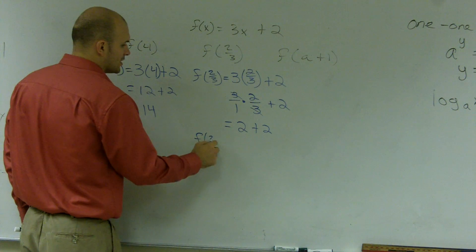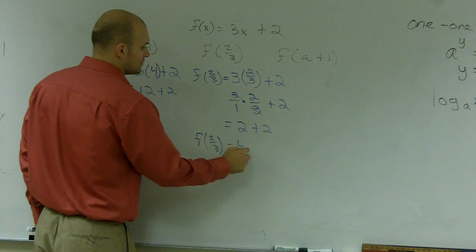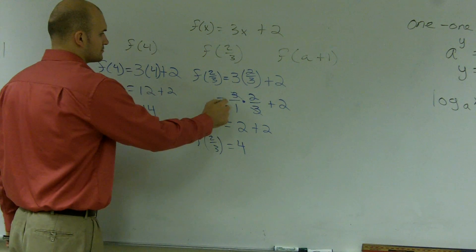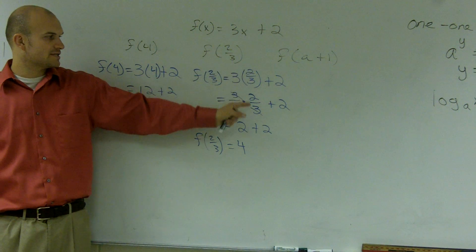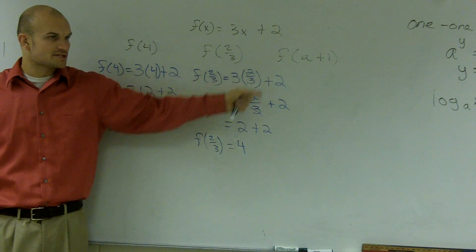So you can say f of 2 thirds equals 4. 3 times 2 thirds is equal to 2, then plus 2 is 4.